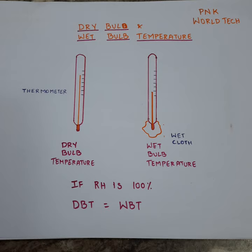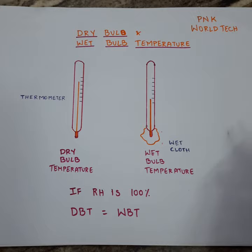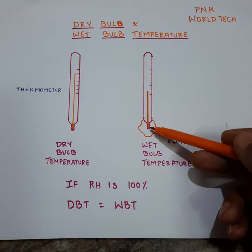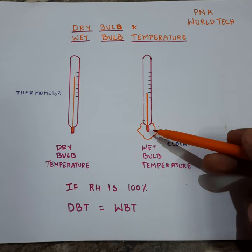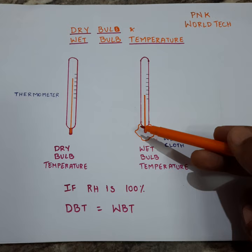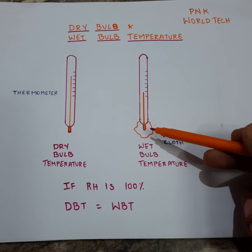Coming to wet bulb temperature — in wet bulb temperature, a wet cloth is surrounded around the bulb. When the atmospheric air is exposed to the wet bulb thermometer, an evaporation process takes place due to the wet condition of the cloth. As the evaporation process takes place, cooling happens in this zone.